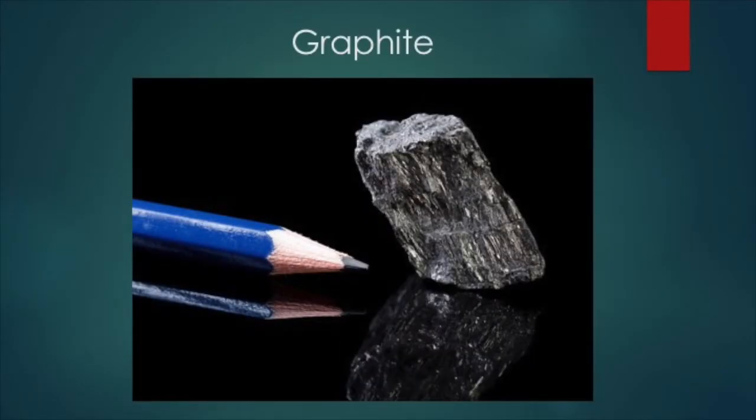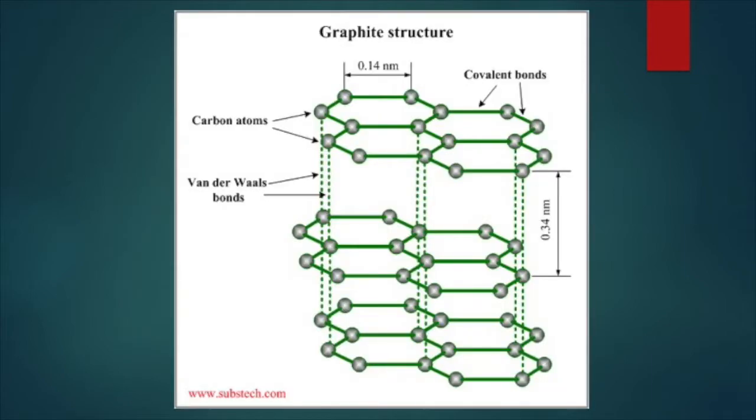Graphite is a crystalline allotrope of carbon, the most stable allotrope under standard conditions. It occurs naturally in igneous rock as well as in meteorites. The structure of graphite is best understood as a stack of weakly bonded 2D atomic lattices. Each lattice is considered a single layer, and individually the layers are referred to as graphene.